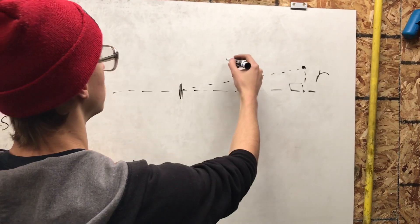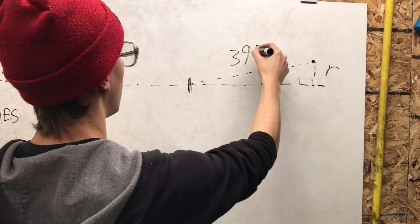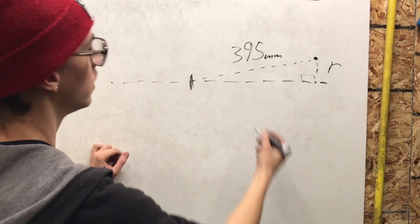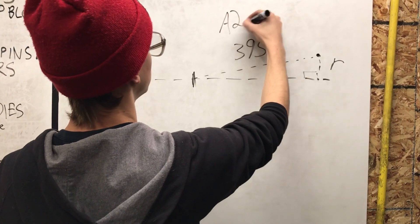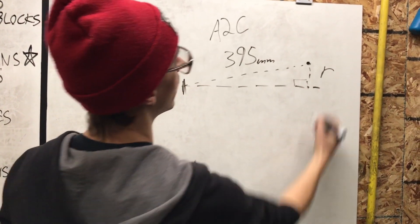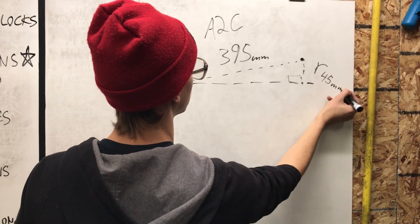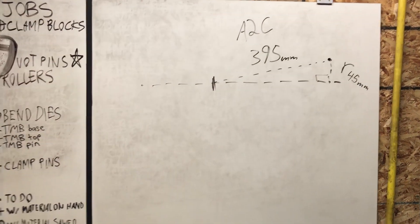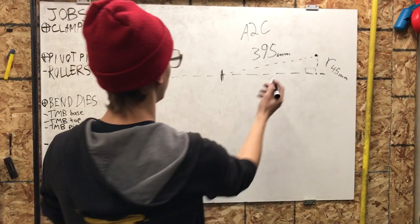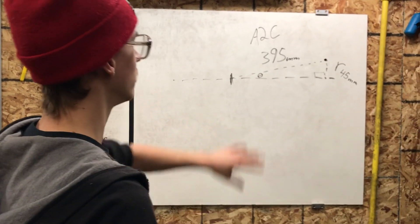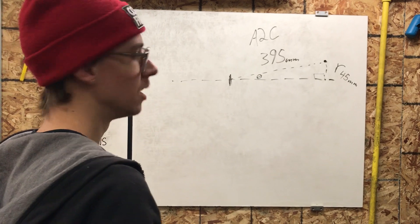And so if you know that your axle to crown is like 395 millimeters, and if you know that your rake is like 45 millimeters, then you can actually figure out what this, they say theta for like an unknown angle, but you can figure out what that angle is pretty easily.